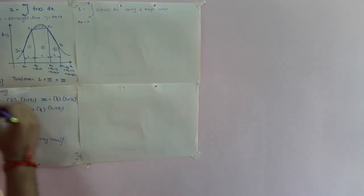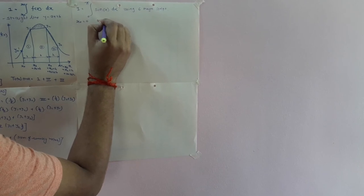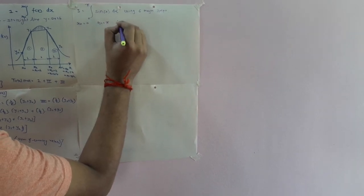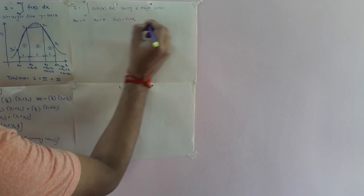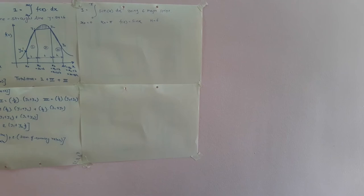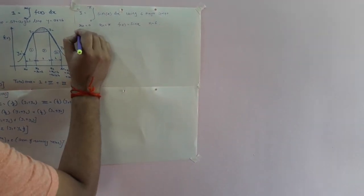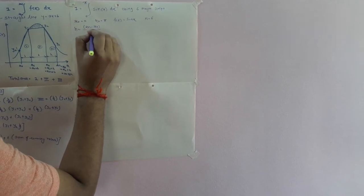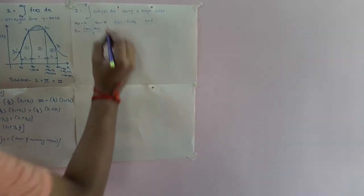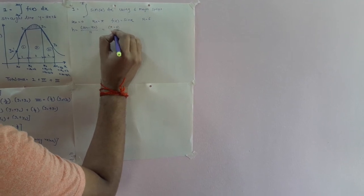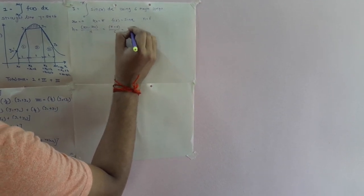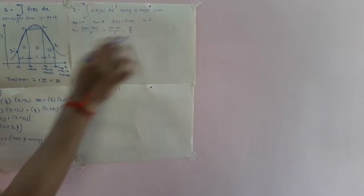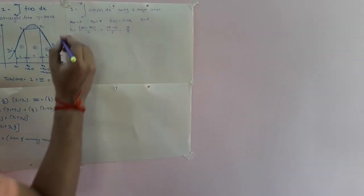x0 = 0, xn = π, f(x) = sin(x), and n = 6 total major strips. The step height h is evaluated using the formula h = (xn − x0)/n = (π − 0)/6 = π/6. Now we will prepare a table of x values and y values, where y = f(x) = sin(x). Remember that your calculator should be in radian mode.